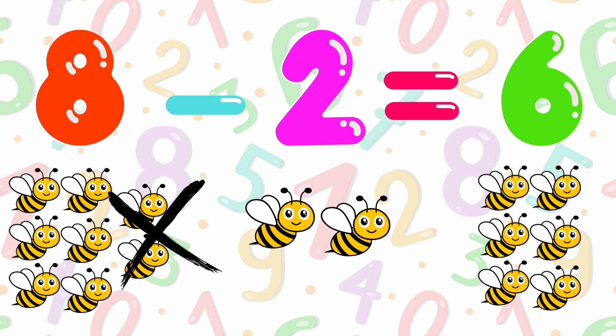8 minus 2 is equals to 6. 8 bees minus 2 bees is equals to 6.